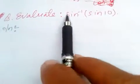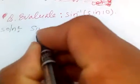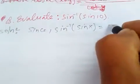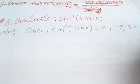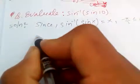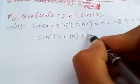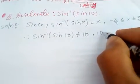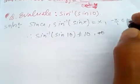Today let's evaluate sine inverse of sine 10. Since sine inverse of sine x equals x, and this is valid for x between minus pi by 2 and pi by 2, sine inverse of sine 10 is not equal to 10, because 10 is not between minus pi by 2 and pi by 2.